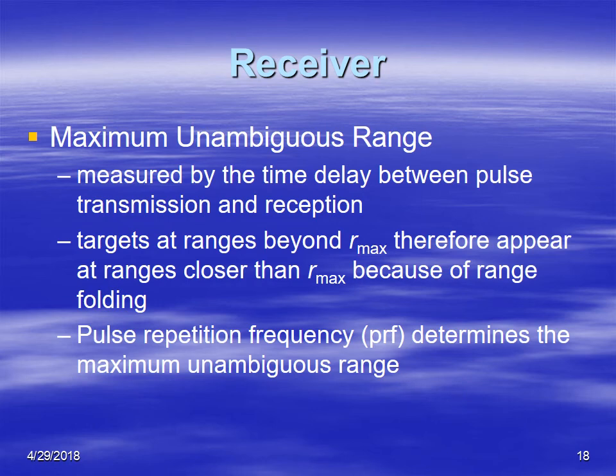Maximum unambiguous range is measured by the time delay between transmission and reception. Things that come back after the second pulse is sent out are called second trip echoes, and they appear much closer to the radar than they actually are. National Weather Service radars change their PRFs depending on how far out they want to see. Those are the components of the radar and some information helpful in understanding what you see on the radar scope.